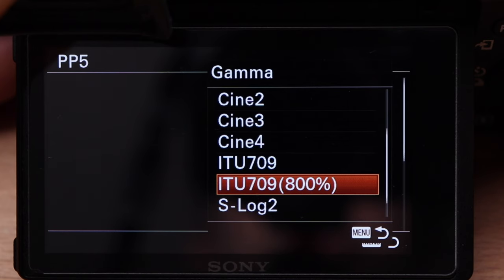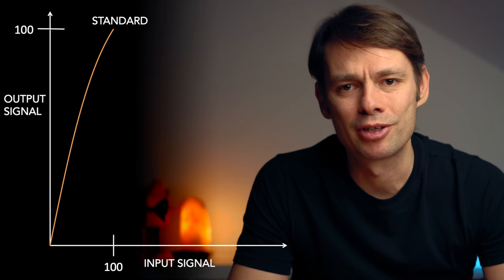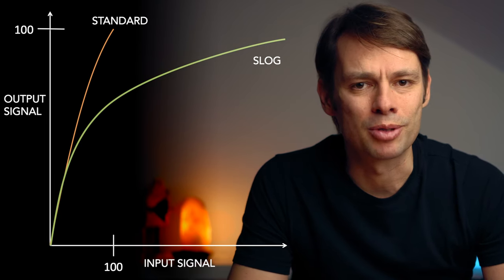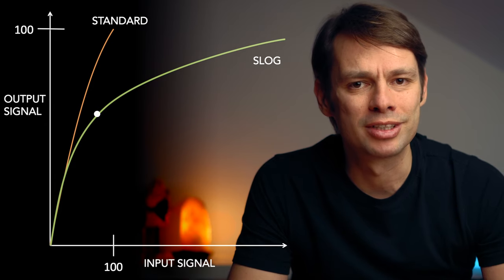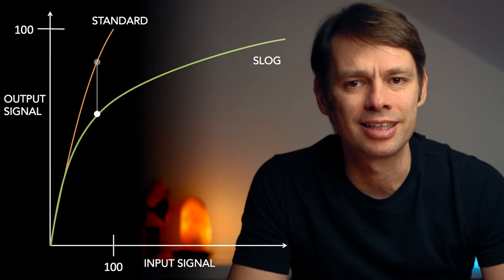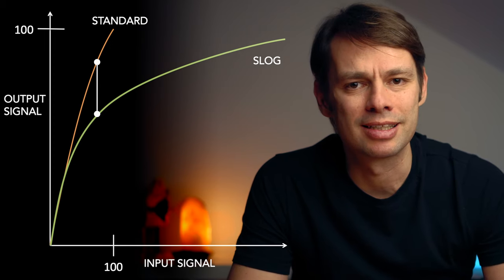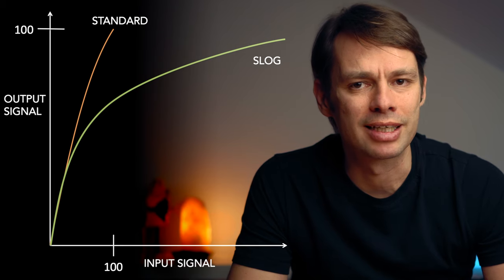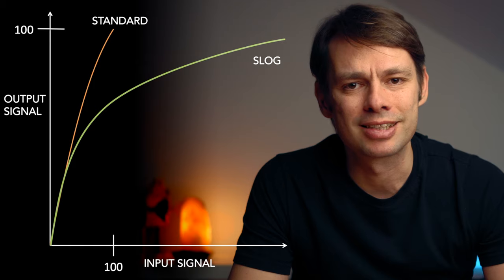Modern sensors like the one in your Sony camera can capture a much wider dynamic range. To capture more details in the bright areas and increase the dynamic range, you can use a different gamma curve — that brings us to S-Log. S-Log is a gamma curve optimized for the dynamic range of the sensor. It can capture much more detail in the very bright parts of the image. Because the gamma curve is now much flatter, this results in an image with much less contrast. The result will look strange and flat, which is why you have to correct it considerably in post.